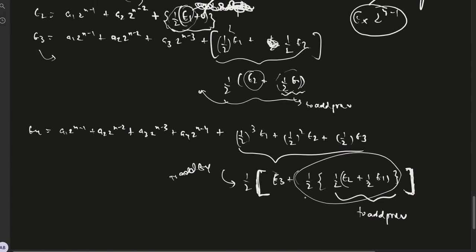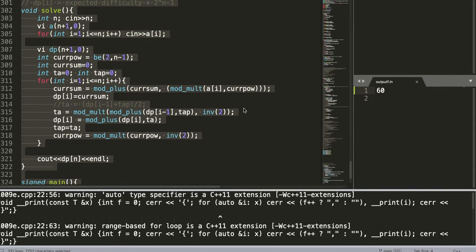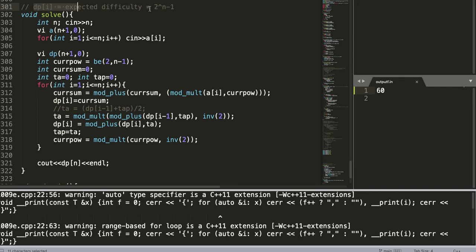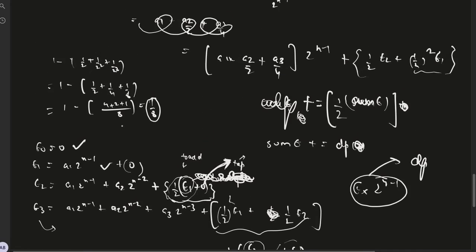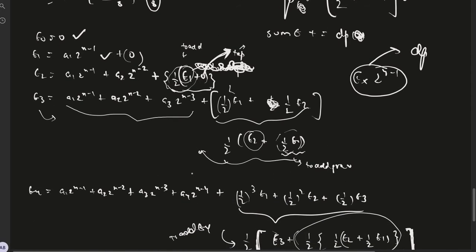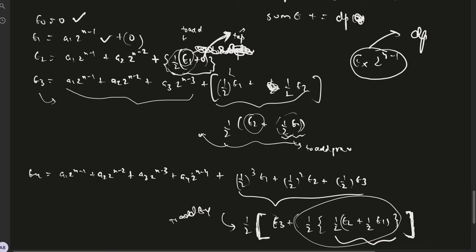The code is very simple, just as we discussed. dp[i] is this value, dp[0] is 0, and we take a loop from 1 to n. Current_sum is basically this term in each dp[i].